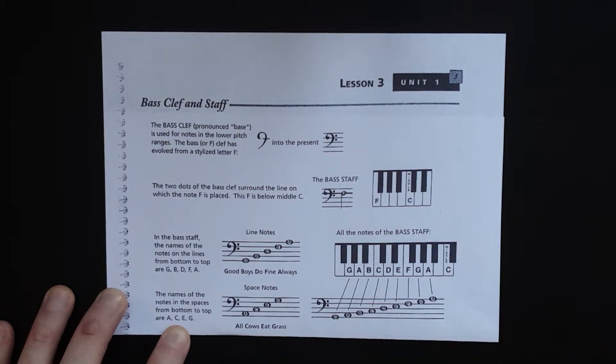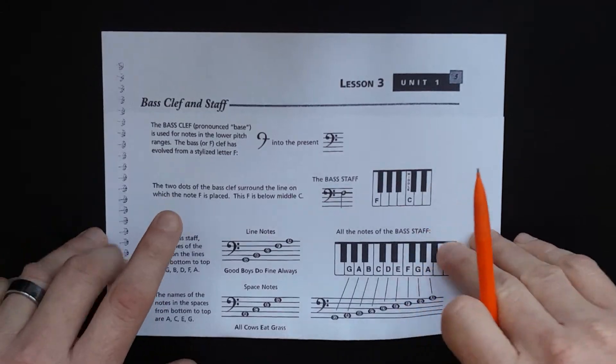Just like in treble clef, it's alphabetical order from line, space, line, space, line, space. So G-A-B-C-D-E-F-G-A, and so on.